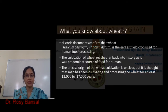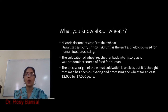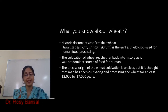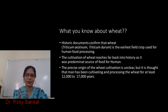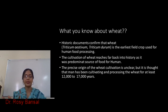Now we will discuss the layers, but before that, what do you know about wheat? There is a central crease in the structure, and if we look at the history, wheat — whether it is Triticum aestivum, Triticum durum, or Triticum compactum — these were among the earliest field crops used as human food. The cultivation of wheat reaches back and was a predominant source of food for humans. The precise origin of wheat cultivation is unclear, but it is thought that humans have been cultivating and processing wheat for at least 12,000 to 17,000 years.